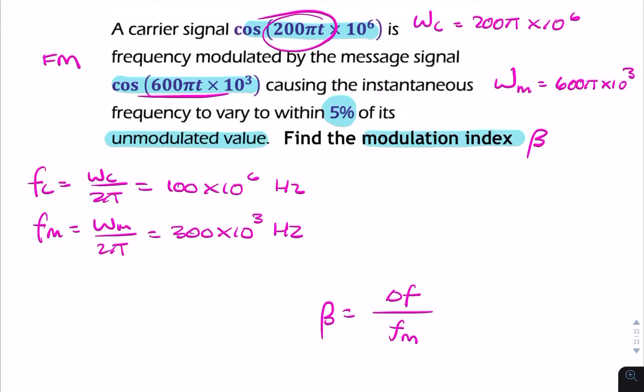Now, what we don't yet have is delta F, but we're told in the question that delta F is 5% of the unmodulated value. The unmodulated value is simply Fc. So the unmodulated value is Fc.